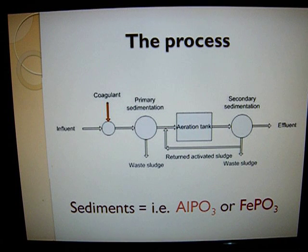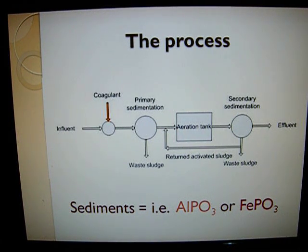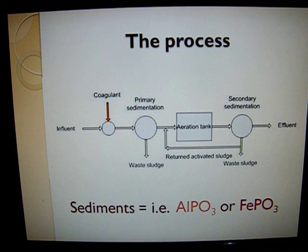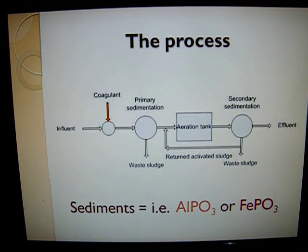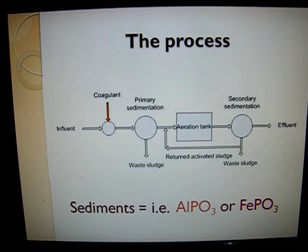The addition of lime to wastewater results in the formation of another insoluble product, calcium hydroxyapatite, which also settles out of solution. By determining the concentration of phosphorus in wastewater, these chemical treatments can be used very precisely. Exactly enough alum or lime can be added to precipitate out the phosphate in the water. Such treatments are normally effective in removing about 95% of all phosphorus originally present in a sample of wastewater.